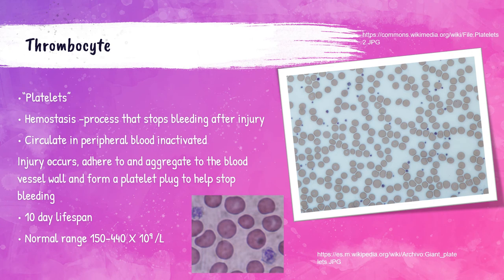Lastly, platelets, or thrombocytes, are responsible for helping to aid in hemostasis — the process that stops bleeding after injury. They circulate in the peripheral blood inactivated, just hanging out until an injury occurs. When that occurs, they adhere and aggregate to the blood vessel wall at the injury site and form a plug to help stop bleeding. We'll discuss this in greater detail in the coagulation/hemostasis lecture. Platelets live around 10 days in the peripheral blood, and the normal reference range for an adult is 150 to 440 × 10⁹ per liter.